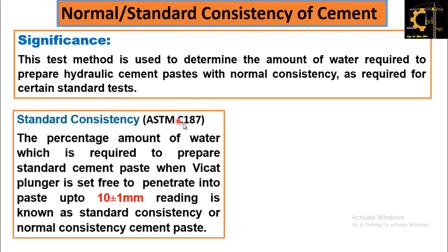According to ASTM standard C187, normal consistency is defined as the percentage amount of water which is required to prepare standard cement paste when the Vicat plunger is set free to penetrate into the paste up to 10 ± 1 mm. This value ranges from 9 mm to 11 mm. If the Vicat apparatus plunger penetrates within the range of 9 to 11 mm, then this paste is called normal consistency of cement, and this amount of water added is called the standard consistent amount of water.